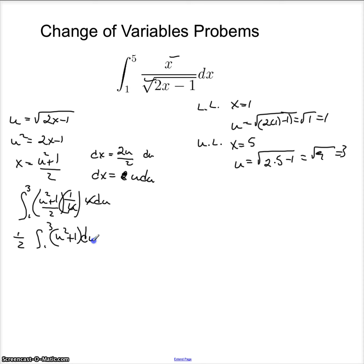Now you know something. I can integrate that fairly easily. This one, not so much. So this becomes 1 half times u cubed divided by 3 plus u evaluated at 1 and 3.